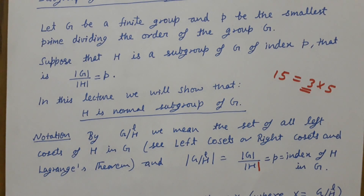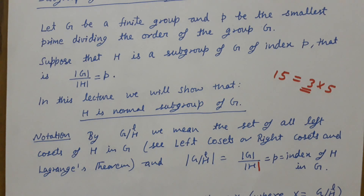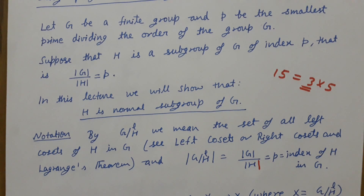For the proof, we will use Group Action 1, Group Action 2, Group Action 3, and the lecture on left cosets, right cosets, and Lagrange's theorem. It is recommended to review these lectures before proceeding.